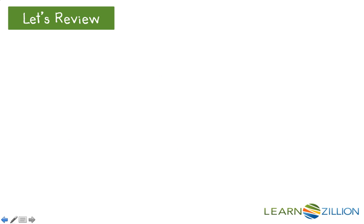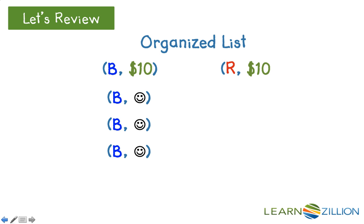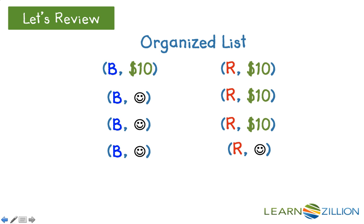Let's review. You already know how to create an organized list. Here we see an organized list of all of the possible outcomes in the Lucky Envelope Game. For each ordered pair, we see the color of the envelope on the left and its contents on the right.